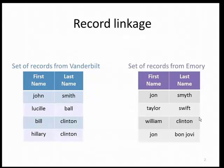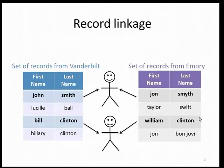Record linkage is identifying the records that refer to the same individual. In this case, we see that two of the record pairs from the different institutions refer to the same individual.